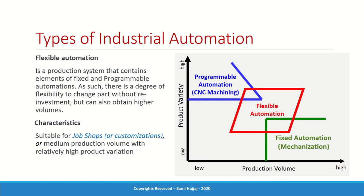Somewhere in between comes flexible automation, which gives you a balance. The production system has a combination of both fixed and programmable elements, giving you some wiggle room to maneuver between them. An example is automotive manufacturing: the chassis of the car is the same (fixed), but the windows or front panel are different, so you do some batch production for those components.